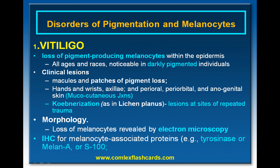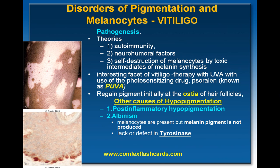In terms of the morphology, there is loss of melanocytes revealed by electron microscopy. Also, understand that there are certain melanocyte-associated proteins — for example, tyrosinase, MLANA, or melan-A, and S100 — which are all associated with vitiligo.